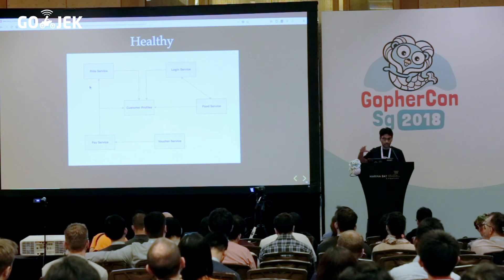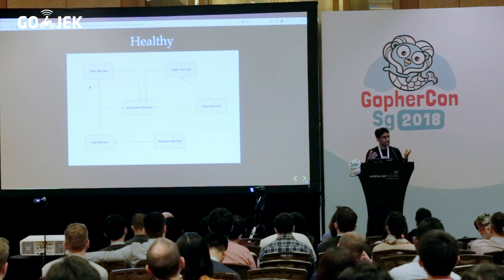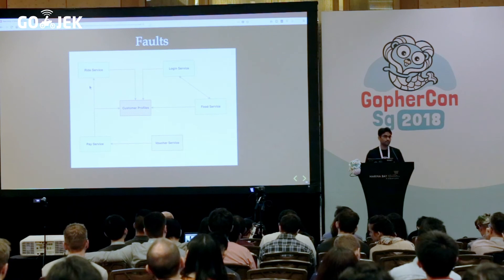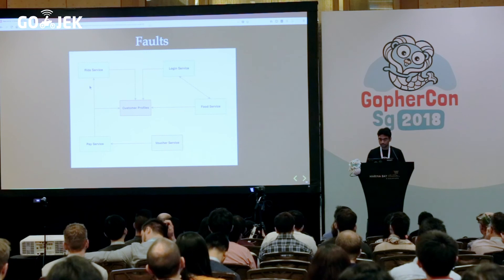Consider these microservices: customer profiles is one critical service that every other system is dependent on. What would happen if one of the dependencies of customer profile — consider a database — slows down? All the direct dependencies actually have a problem; they are affected. Voucher service is not affected because it's a transitive dependency. This is what a fault looks like — wherein the systems dependent on a service which has a fault have a problem.